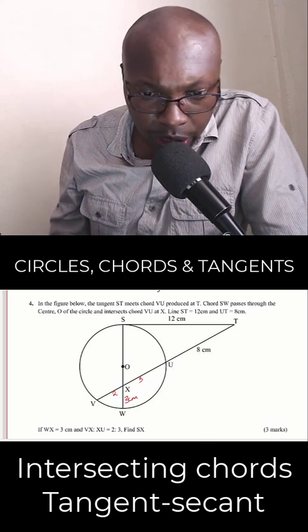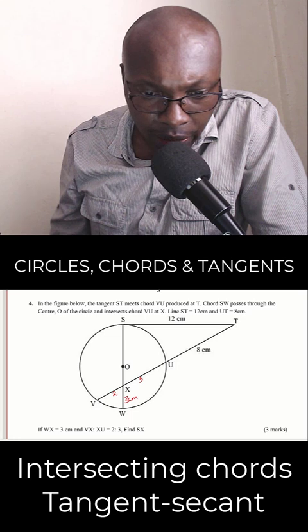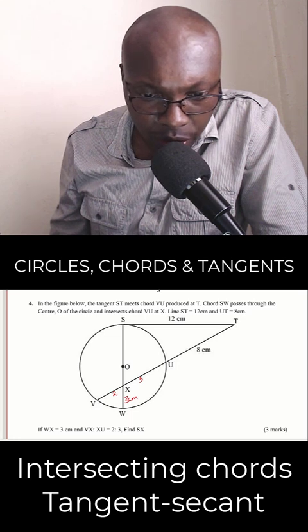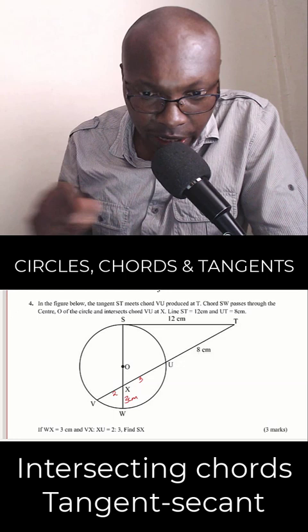So we can use that property, and that one will help us to get VU. Once we get the length of VU, we shall use the ratio that is given there, 2 to 3, to get the lengths VX and XU.